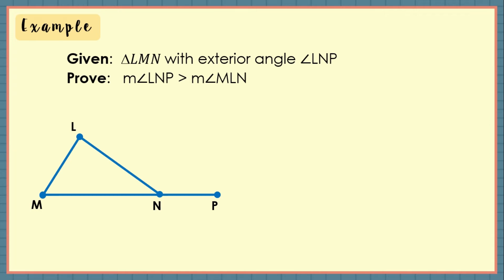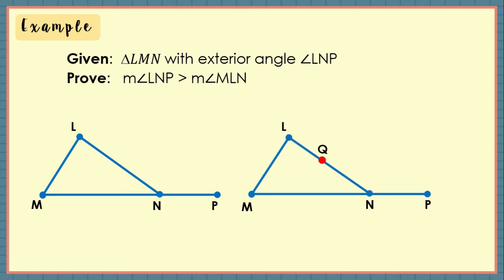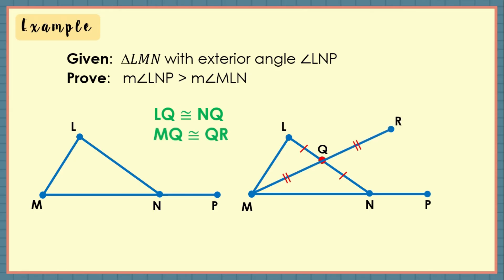Let us prove this inequality by constructing the following. First, midpoint Q on LN such that segment LQ is congruent to segment NQ. Next, segment MR through point Q such that segment MQ is congruent to segment QR. Then, draw a line from point R to N to form a segment and label angles 1, 2, 3, and 4.